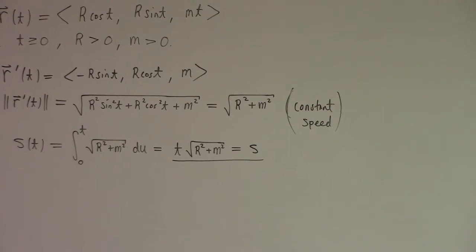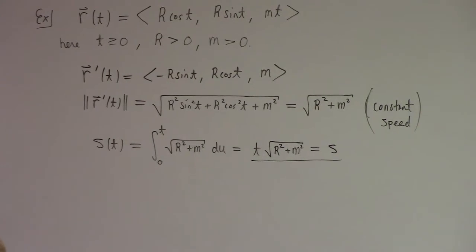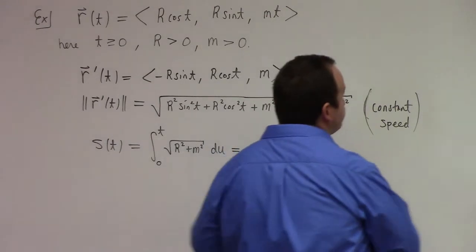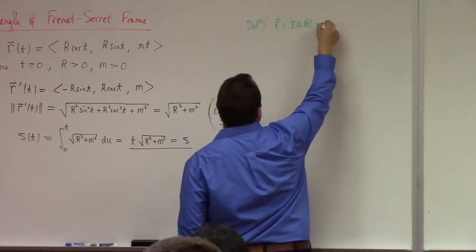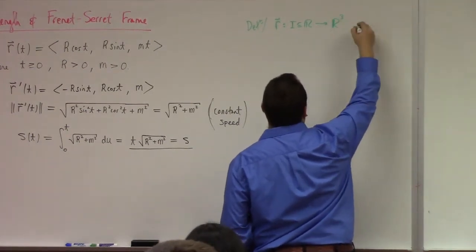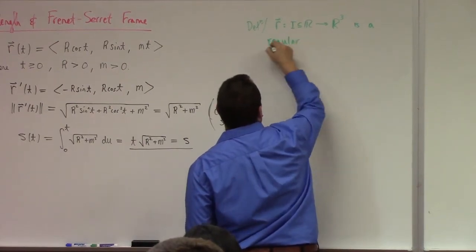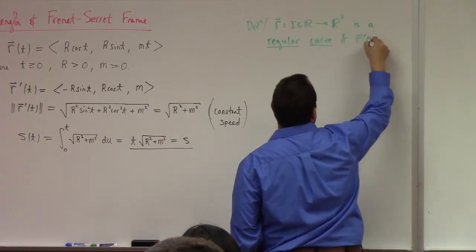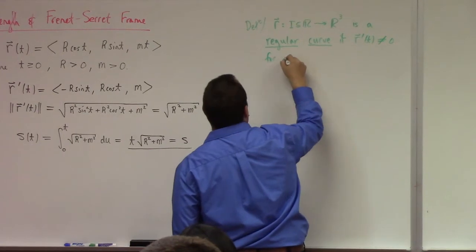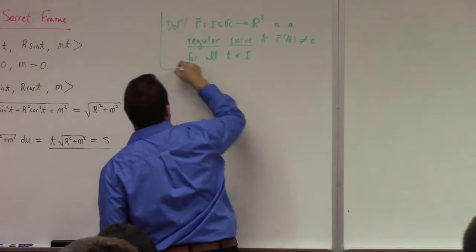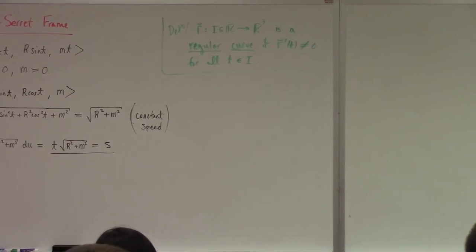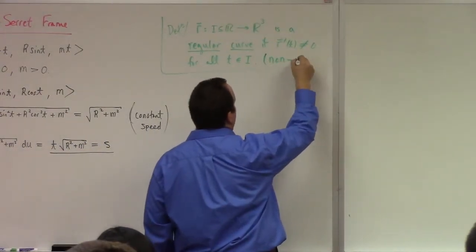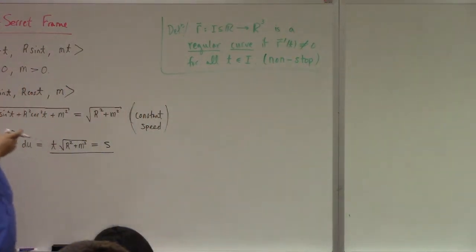Now, one of the things you can do if you have a curve that has non-zero velocity all along the curve, it's said to be a regular curve. Definition: R, from some subset of the reals to R³ (or Rⁿ), is a regular curve if R prime of T is not equal to zero for all T in the domain I. In this course, I'll refer to a regular curve as a non-stop curve — it doesn't stop. My example is a non-stop curve; it has constant speed, so the velocity is never zero.